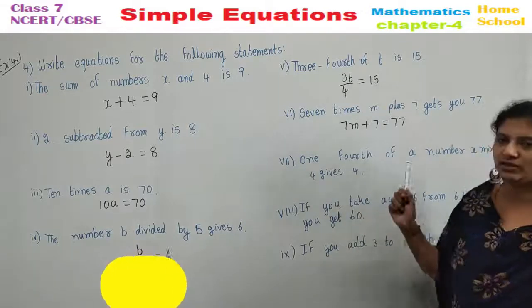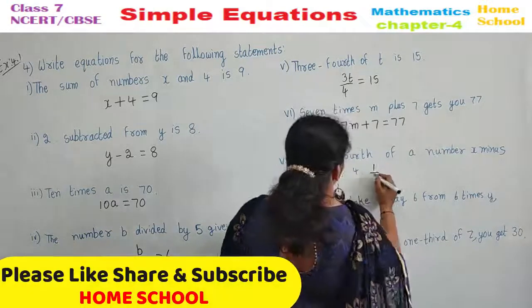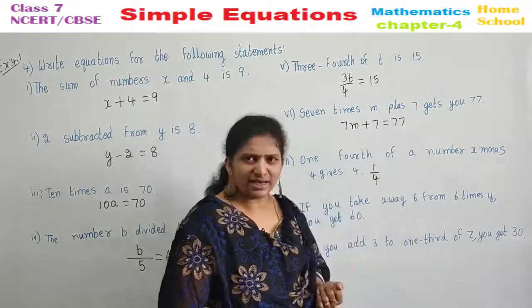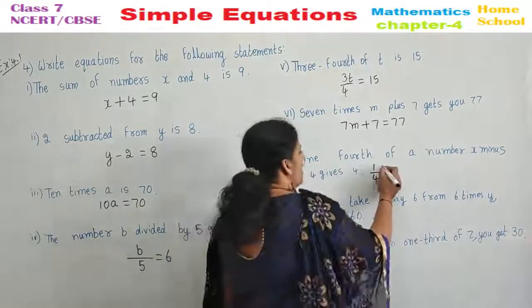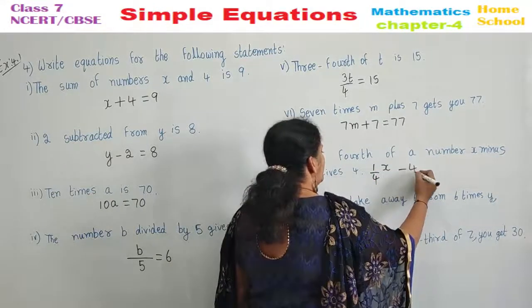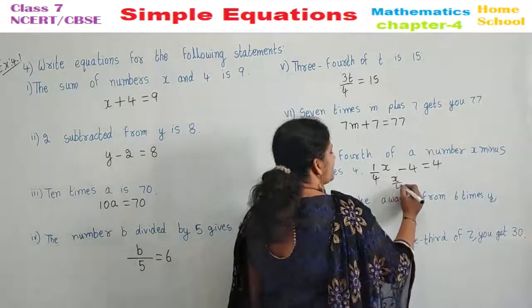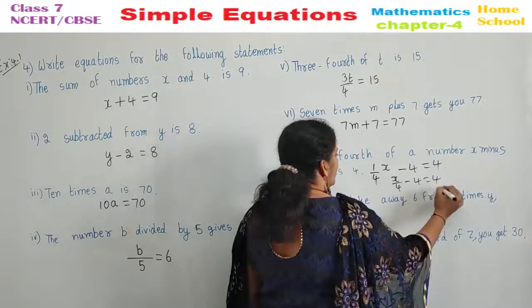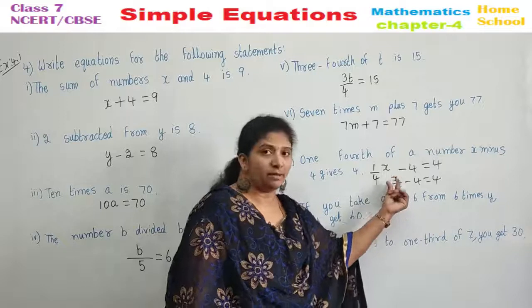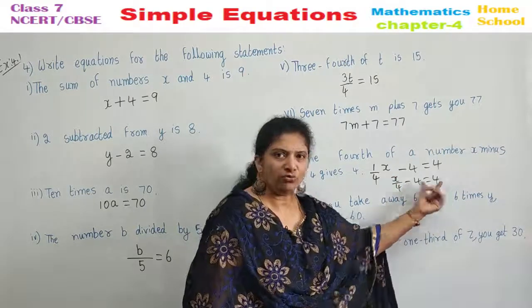7th one. 1 fourth. 1 fourth means what? 1 by 4. 1 fourth of a number X. What is that number X? 1 fourth of X minus 4 gives you 4. Or this you may write it as X by 4 minus 4 equal to 4. I repeat 1 fourth of a number X minus 4 gives you 4.